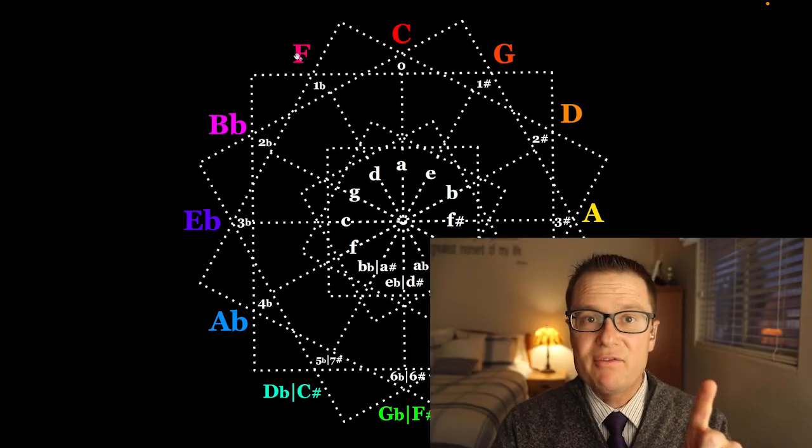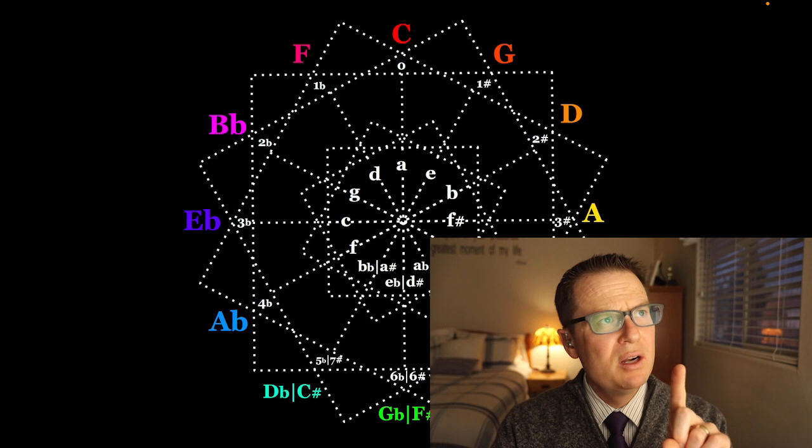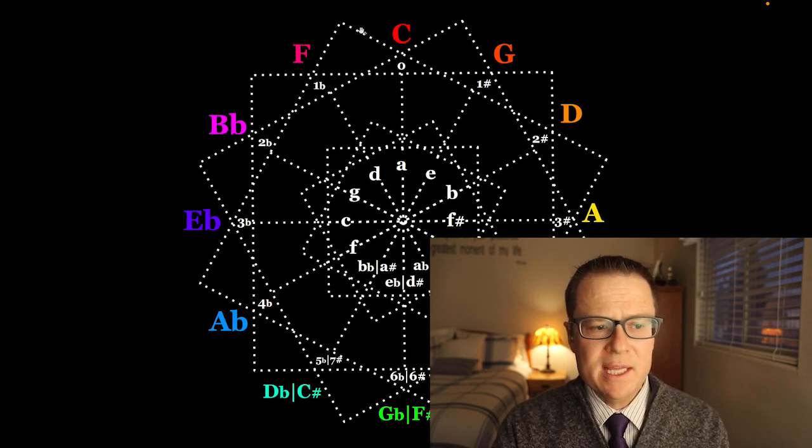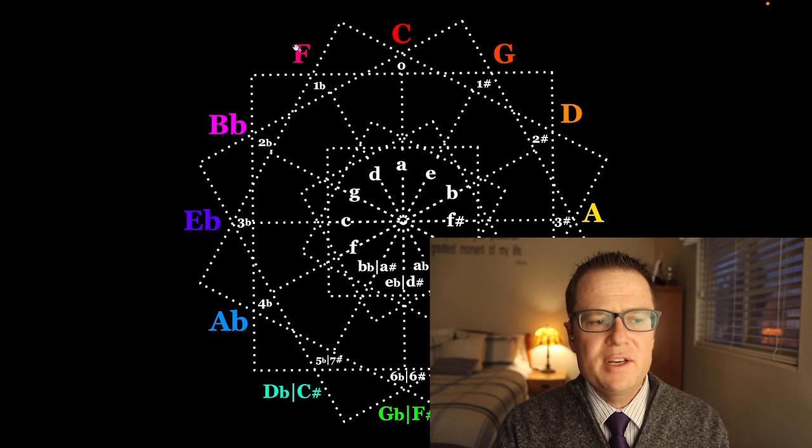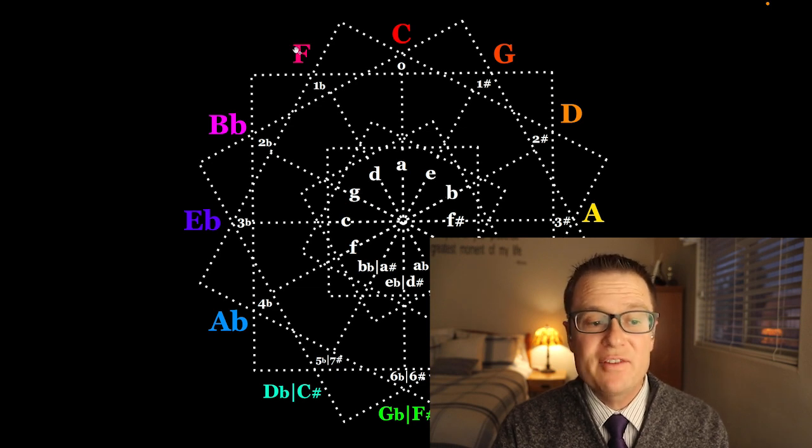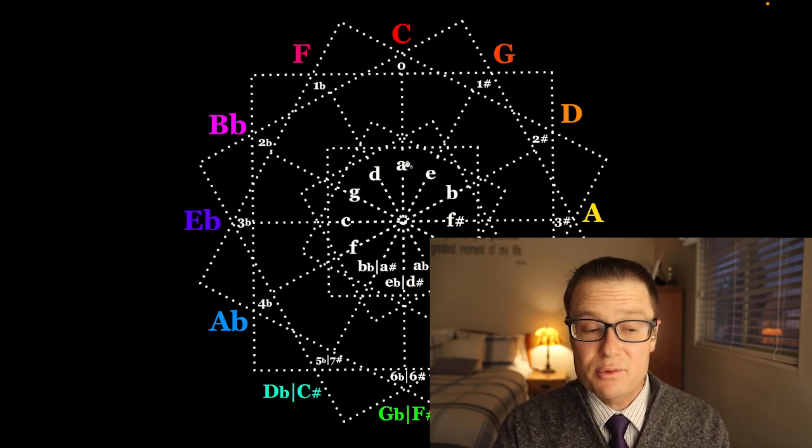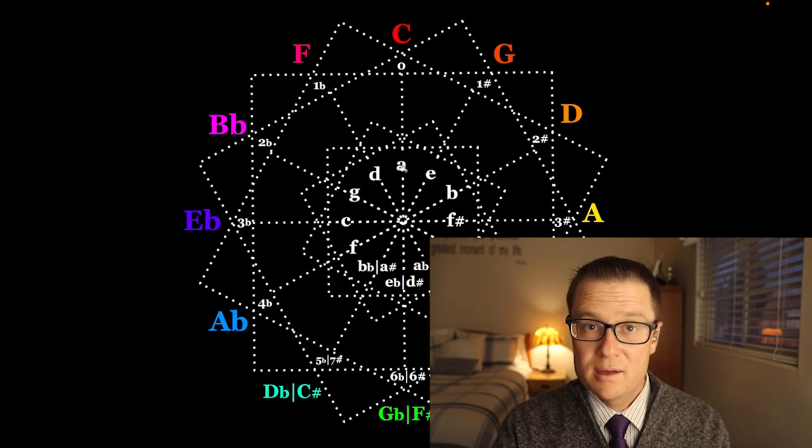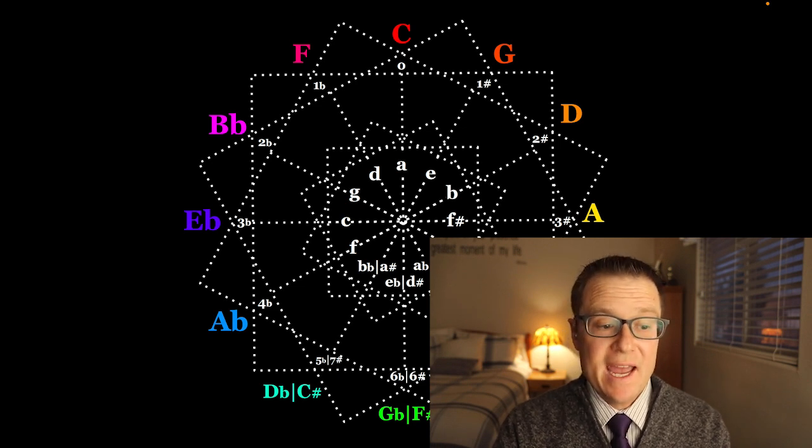Now F, F is now perceived as the new one. So the closely related keys are these six notes. So now if we do the same thing and move from F to A, it's three.